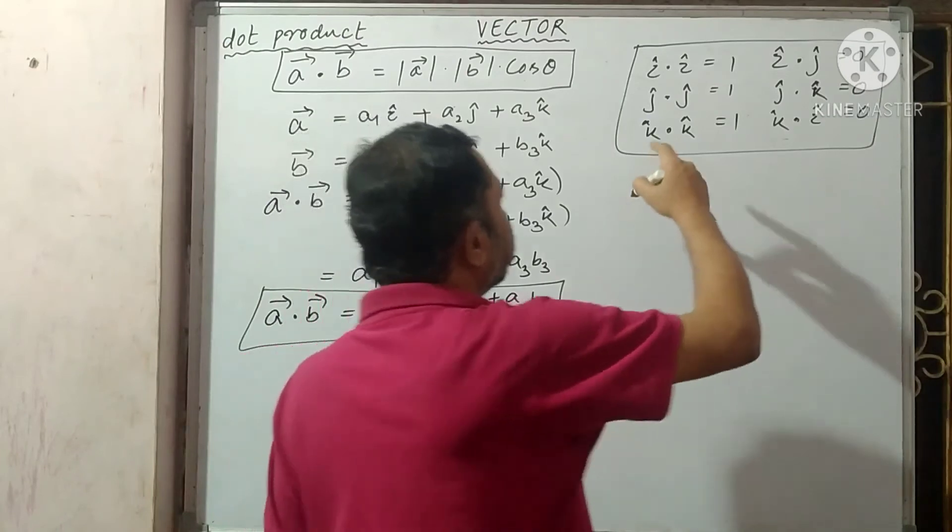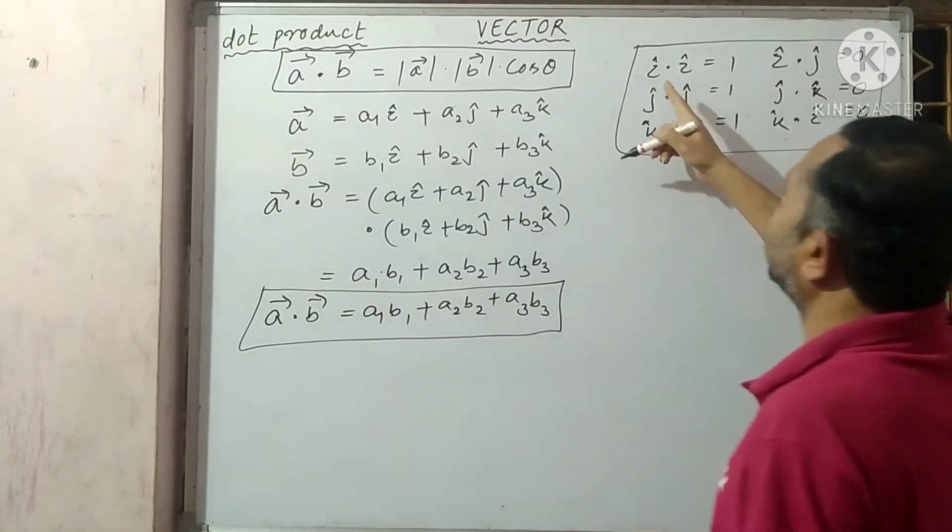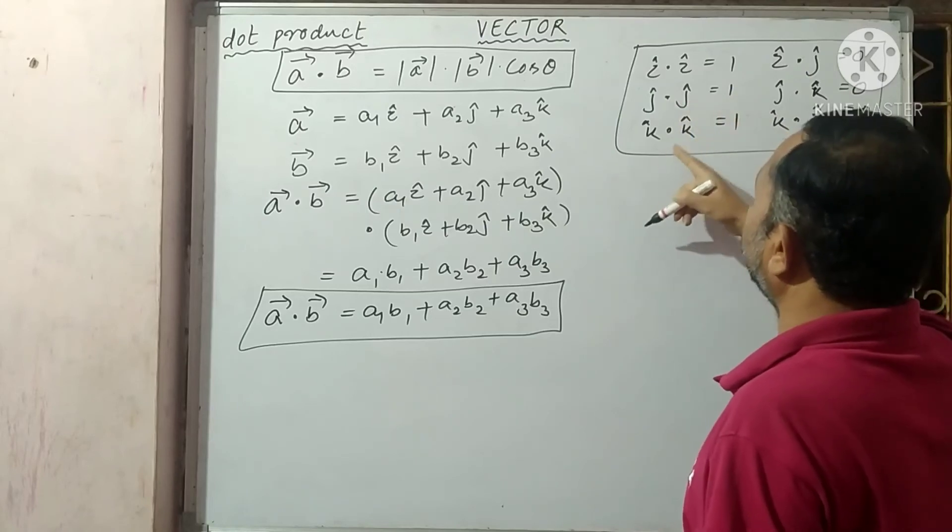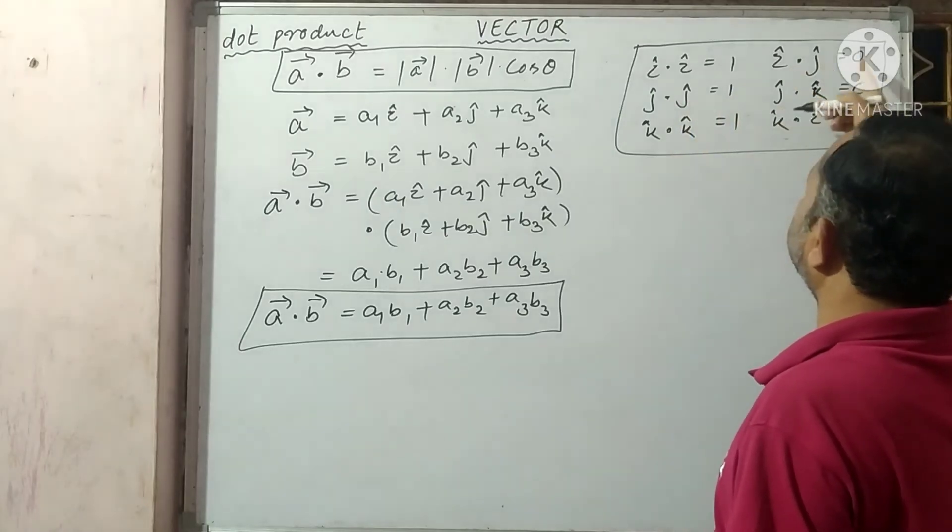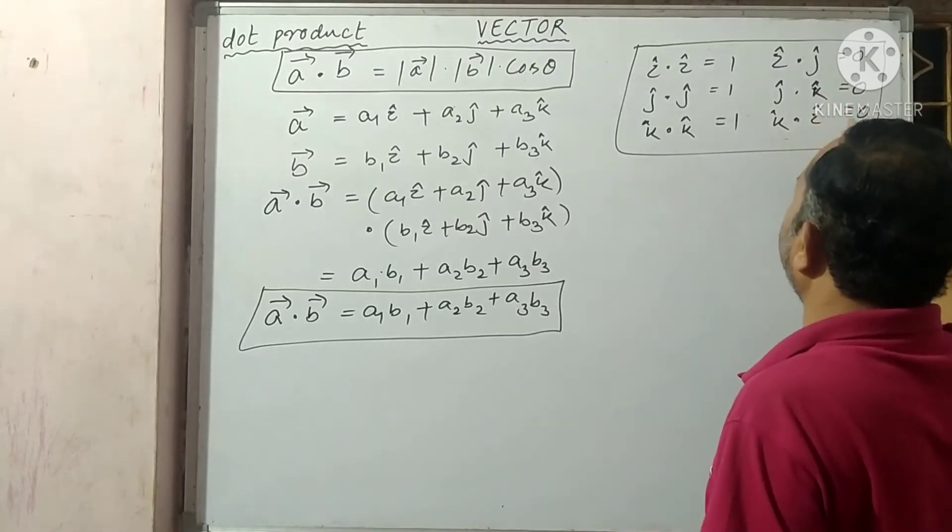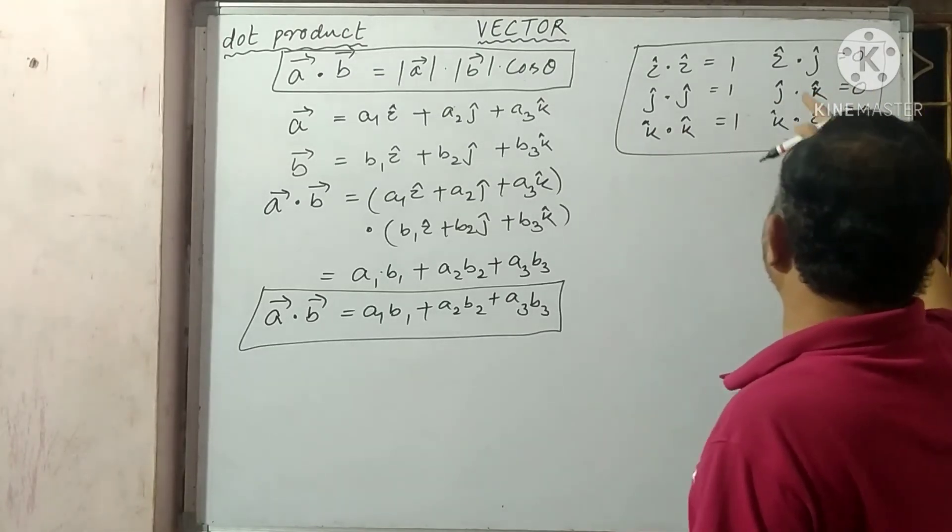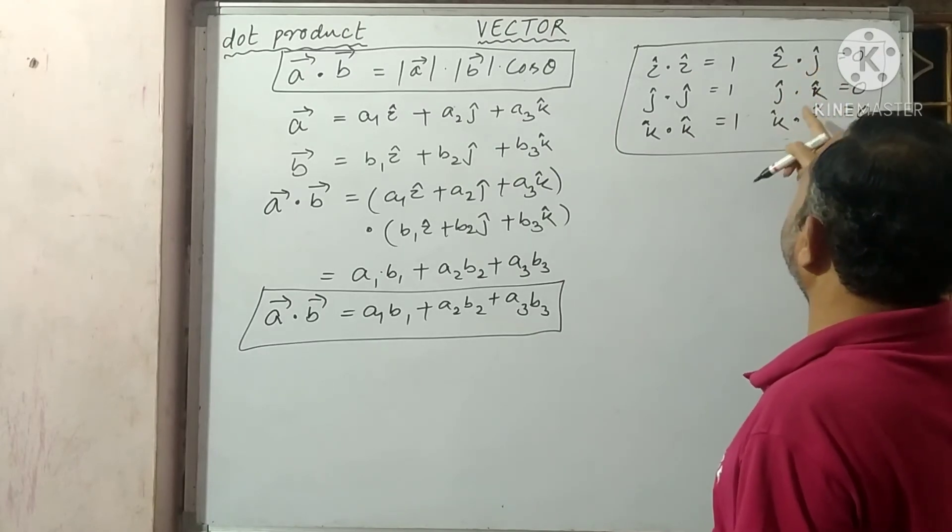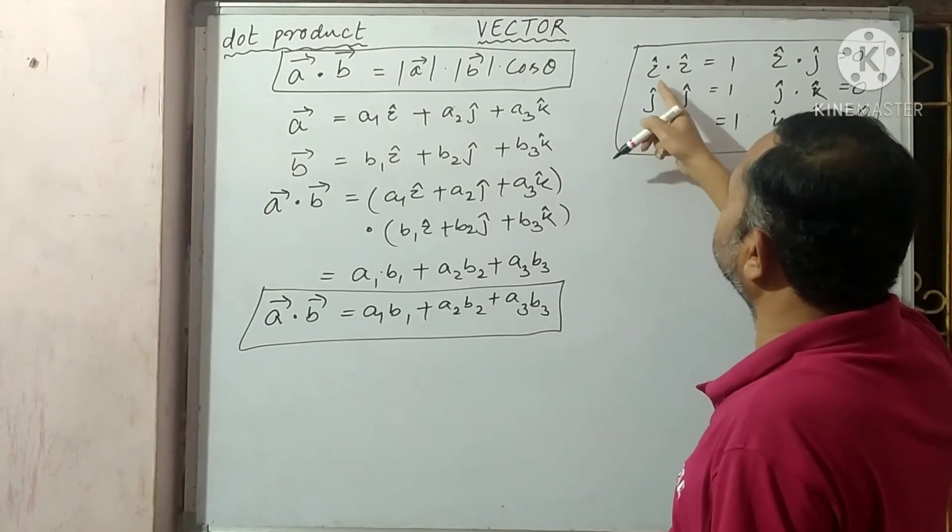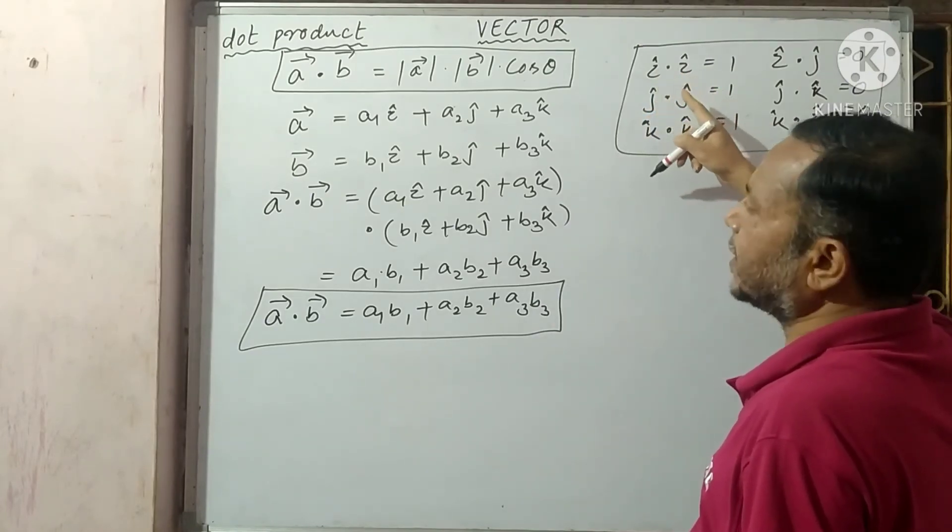Now remember this: i dot i equals 1, j dot j equals 1, k dot k equals 1. i dot j equals 0, j dot k equals 0, k dot i equals 0. Because the angle between perpendicular unit vectors is 90 degrees, so cos 90 is 0, and the angle between a unit vector and itself is 0 degrees, so cos 0 degrees is 1.